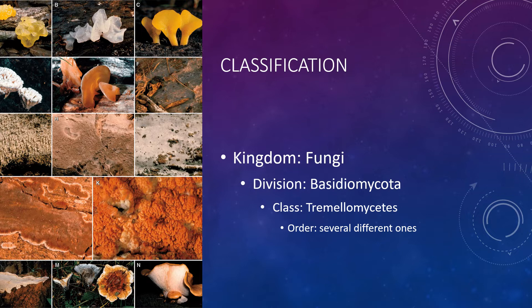Some of the different jelly fungi are Calocera cornea, Calocera viscosa, Dacryopinax spathularia, Dicrymesis palomatis, Dacryopinax, Maxium nucleidium, Tremella foliacea, Tremella mesenterica, and Tremella encephala.